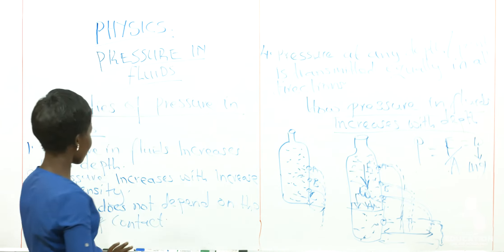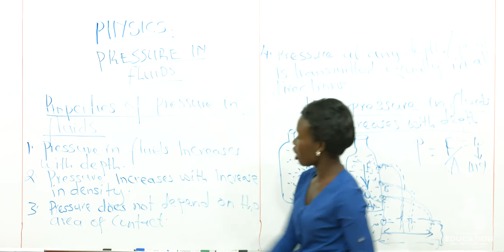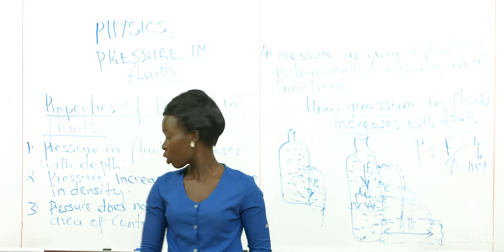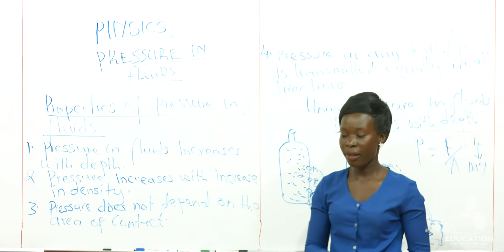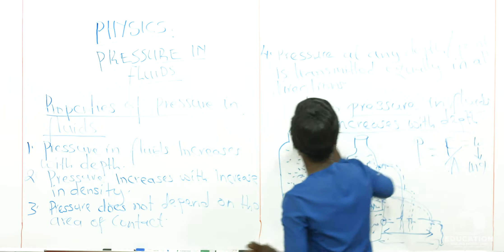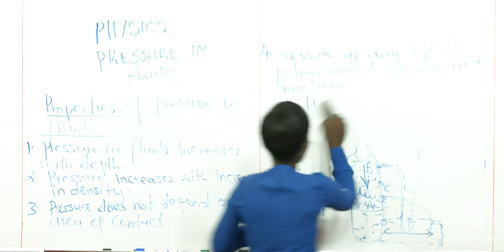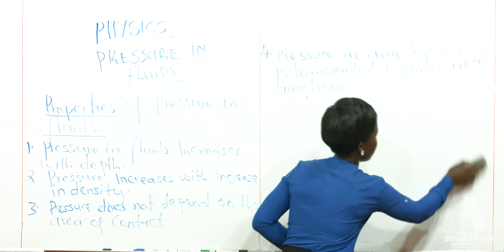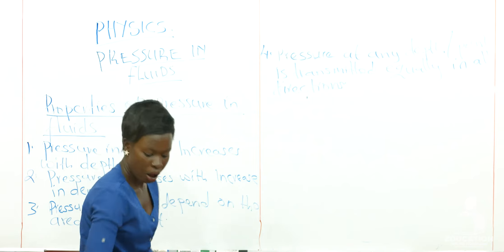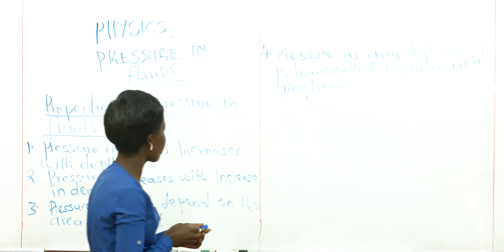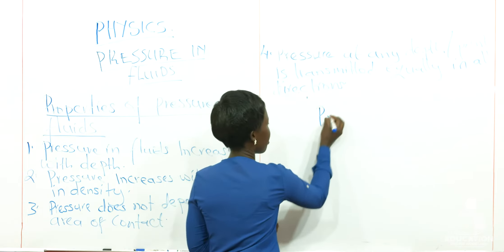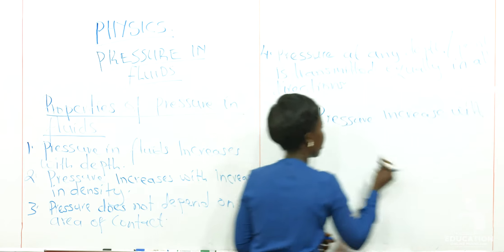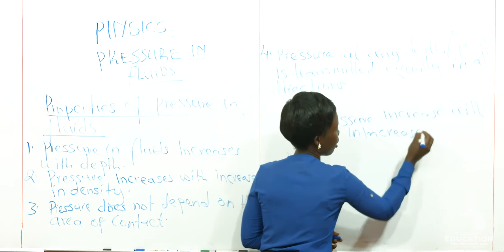The second property is that pressure increases with increasing density. How is that possible? You can do your own experiment the same way we did this one. This time, what you should do is see how pressure increases with increasing density.